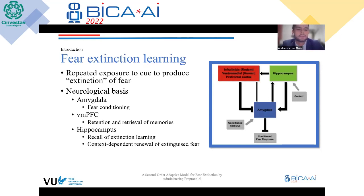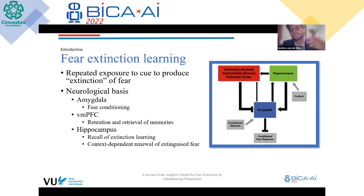Fear extinction learning involves repeated exposure to a cue to produce the extinction of fear. The neurological basis involves the amygdala, the ventral medial prefrontal cortex, and the hippocampus. The amygdala is involved in fear conditioning via a conditioned stimulus leading to a conditioned fear response; the ventral medial prefrontal cortex is mostly involved with retention and retrieval of memories; and the hippocampus is involved in recall of extinction learning and also the context-dependent renewal of extinguished fear.